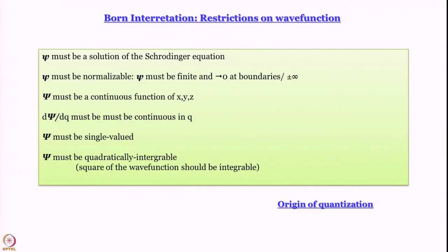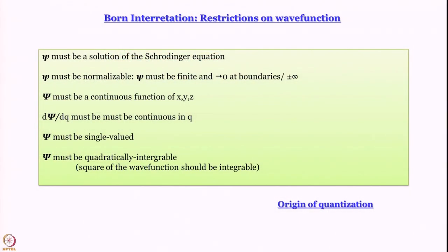The probability of finding a particle in one-dimensional space between x and x+dx is given by ψ ψ* dx. This probabilistic interpretation of the wave function led to several restrictions on wave functions. We know that ψ must be a solution of the Schrödinger equation and it has to be normalizable — meaning the integral of ψ ψ* over all space must equal 1, because the total probability of finding the particle somewhere in space has to be 1. Also, ψ must be finite, because if it is infinite at even one point the integral won't equal 1. And ψ must vanish at the boundaries.